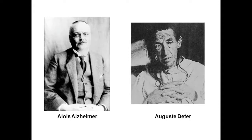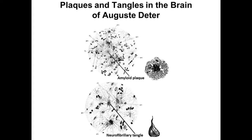When Alzheimer looked in the brain of Auguste Dieter after her death, he saw two dense masses of misfolded aggregated protein. One he called senile plaques — we now call them amyloid plaques — and these were on the outside of the dying neurons. The others he called neurofibrillary tangles, which were on the inside of the dying neuron. There are different proteins in these two particular structures.